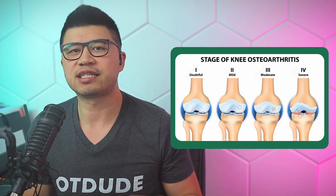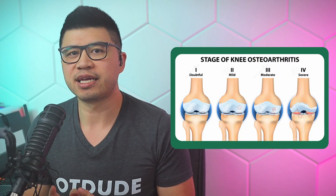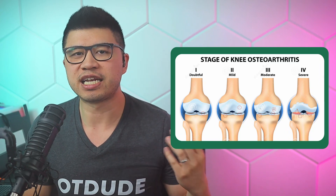Another important concept is the staging of OA. Here's an illustration of the stages of knee arthritis. While there is no cure for OA, management includes medications, surgical interventions such as total hip and total knee replacements, and OT.